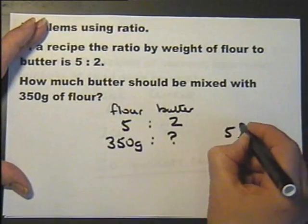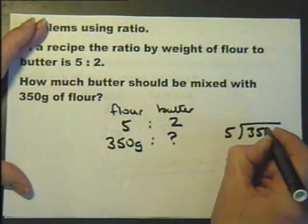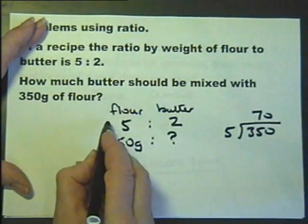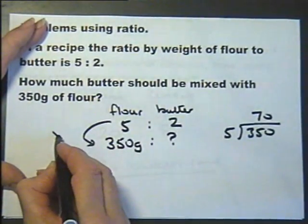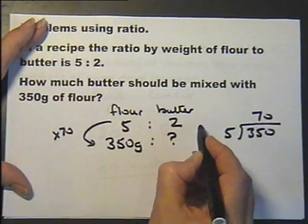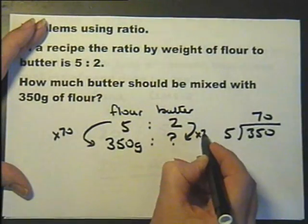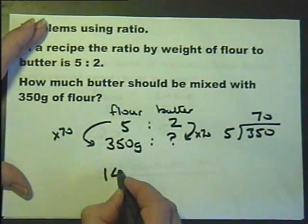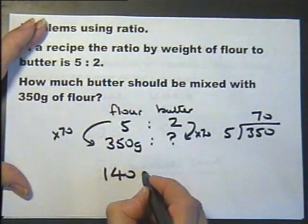Let's assume it's not a calculator paper. That's been multiplied by 70. So if I multiply that also by 70, I'll get 140. And the answer is...